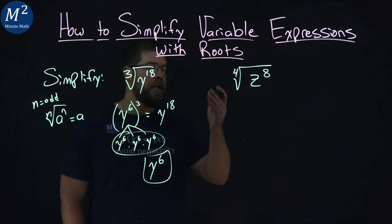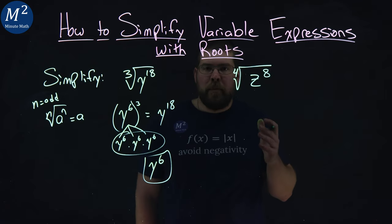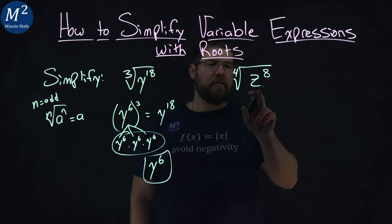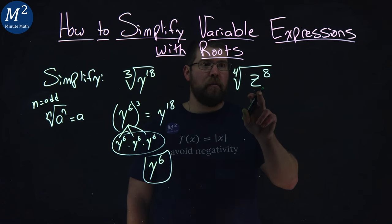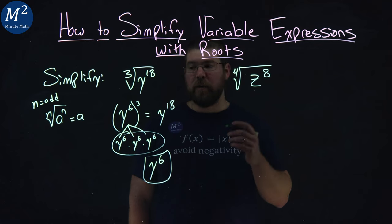Now, the second one here, we have an even root, so we kind of have to worry about the absolute values. We'll see where we get in the end. We want to ask ourselves again a question. What pairs of four gives us z to the eighth power? How can we simplify that?